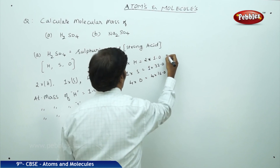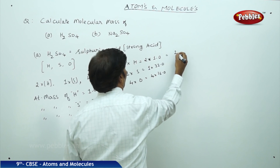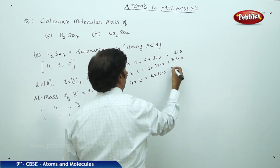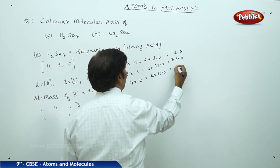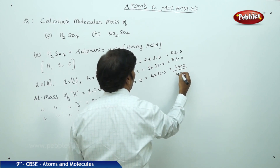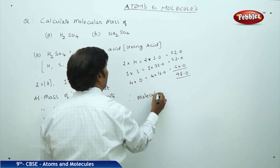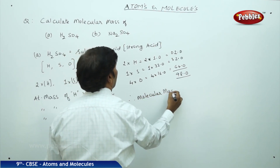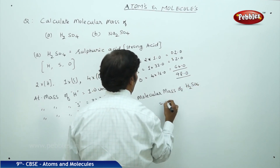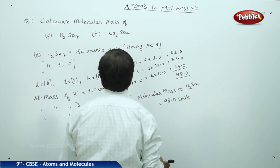Upon simplification: 2 into 1 equals 2.0, plus 1 into 32 equals 32.0, plus 4 into 16 equals 64.0. Adding these together gives 98.0. Therefore, the molecular mass of H2SO4 is equal to 98.0 units.